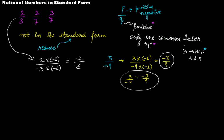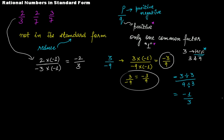So the steps are: first, remove the negative sign from the denominator; second, find the highest common factor and divide both numerator and denominator by it — ignoring the negative sign while dividing. In this case, the highest common factor is 3, so divide 3 by 3 and 9 by 3, keeping the minus sign aside. This gives us -1 over 3, which is the standard form.